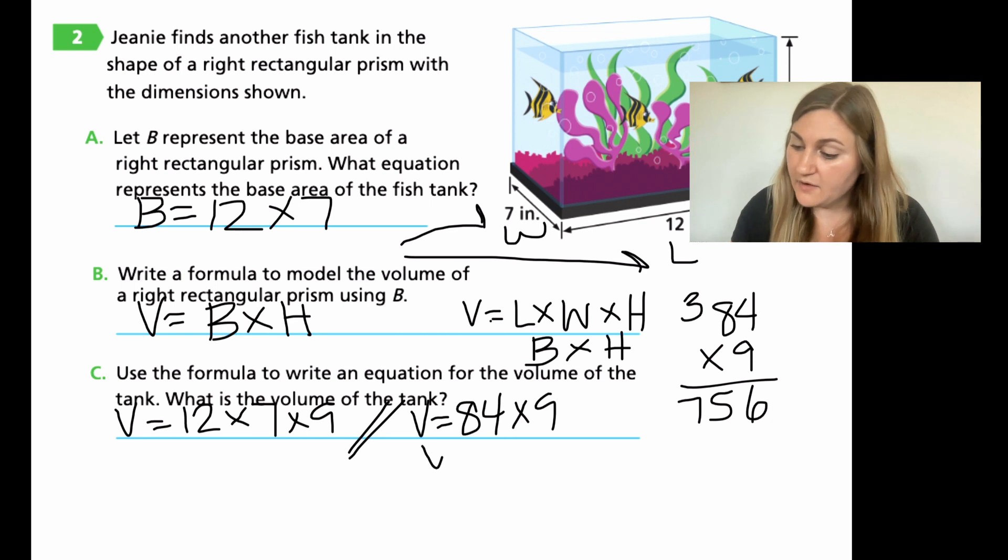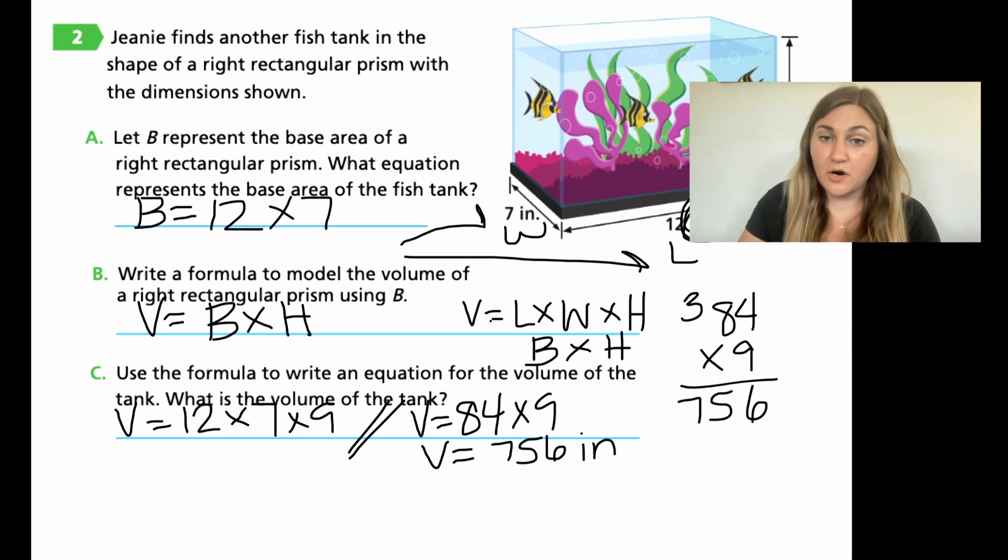So my volume is equal to 756. Remember my units are inches. And because I found three dimensions, three parts and volume, it is going to be the three in the exponent reading 756 inches cubed or 756 cubic inches.